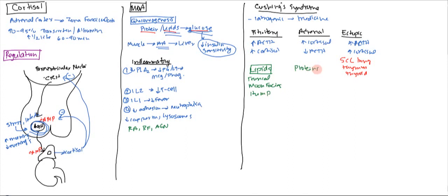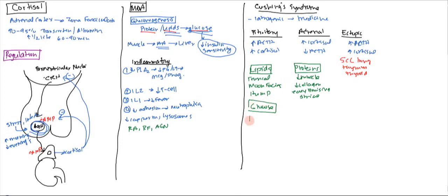Regarding proteins — cortisol breaks down protein to give amino acids to the liver for gluconeogenesis. Protein is taken from muscle, causing decreased muscle mass. Collagen is also broken down, leading to easy bruising and abdominal striae because the skin becomes weak and breaks apart. With glucose, we get hyperglycemia — increased blood glucose — and decreased insulin sensitivity, which we call adrenal diabetes.